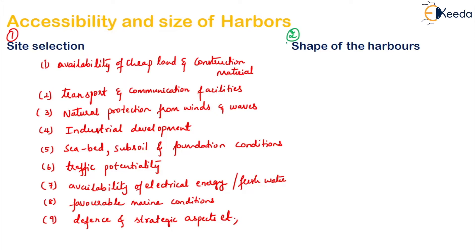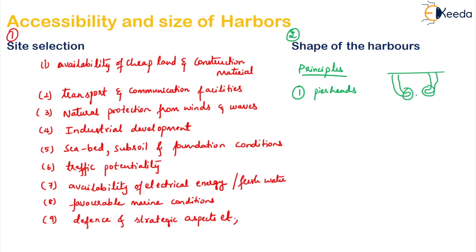The second factor is the shape of the harbour. While deciding the shape, we have to keep some principles in mind. The first principle is that whenever we are building the breakwaters or pier heads — the ends of the break walls — we have to make sure that one pier head is ahead and inside of the other, so they are not at the same position. There is a gap between the two pier heads.